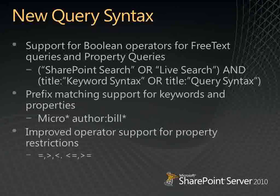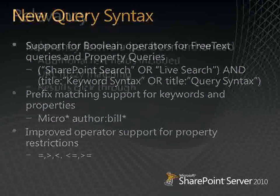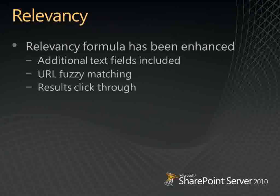You can also use operators like equals, greater than, less than, less than or equal to, and greater than or equal to — giving a tremendous amount of power to find the exact content your users are looking for. The relevancy formula has also been enhanced, with more fields included in the relevancy algorithm to deliver better, more relevant results. There's also new capability for URL fuzzy matching, so if your search query isn't exactly right, SharePoint will attempt to guess what you meant.